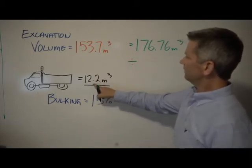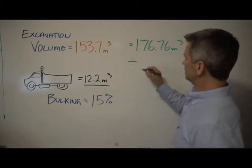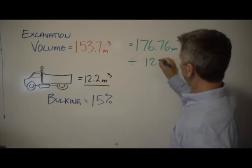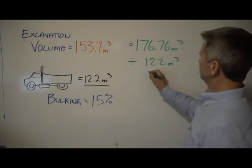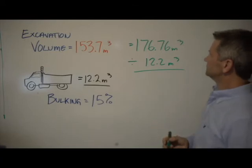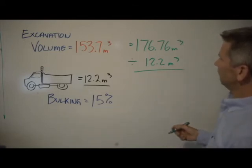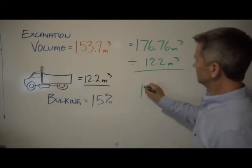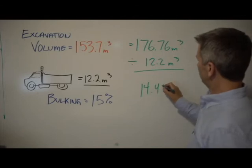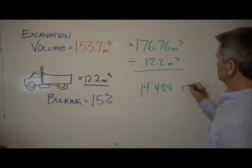Now we simply take 176.76 cubic meters, which includes our 15 percent bulking factor, and we divide that by the amount of material that we can get in each truck. In this case it's 12.2 cubic meters. 176.76 divided by 12.2 is 14.488 trucks.